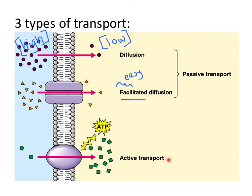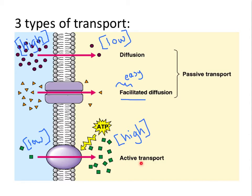Contrast that with the third type: active transport. Here, a molecule is less concentrated outside the cell and more concentrated inside. Sometimes the cell wants to fight against diffusion and keep valuable molecules inside, so while those molecules might want to spread out and move outward, the cell fights that tendency and runs a process called active transport to keep them at a high concentration inside. Let's look at each of these three types of transport in a little more detail.